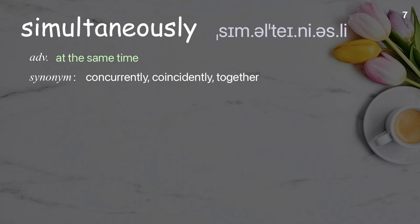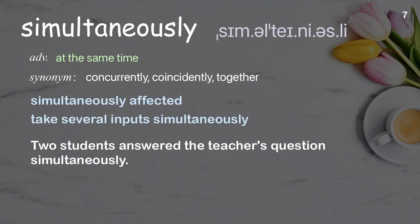Simultaneously: At the same time. Examples: Simultaneously affected. Take several inputs simultaneously. Two students answered the teacher's question simultaneously.